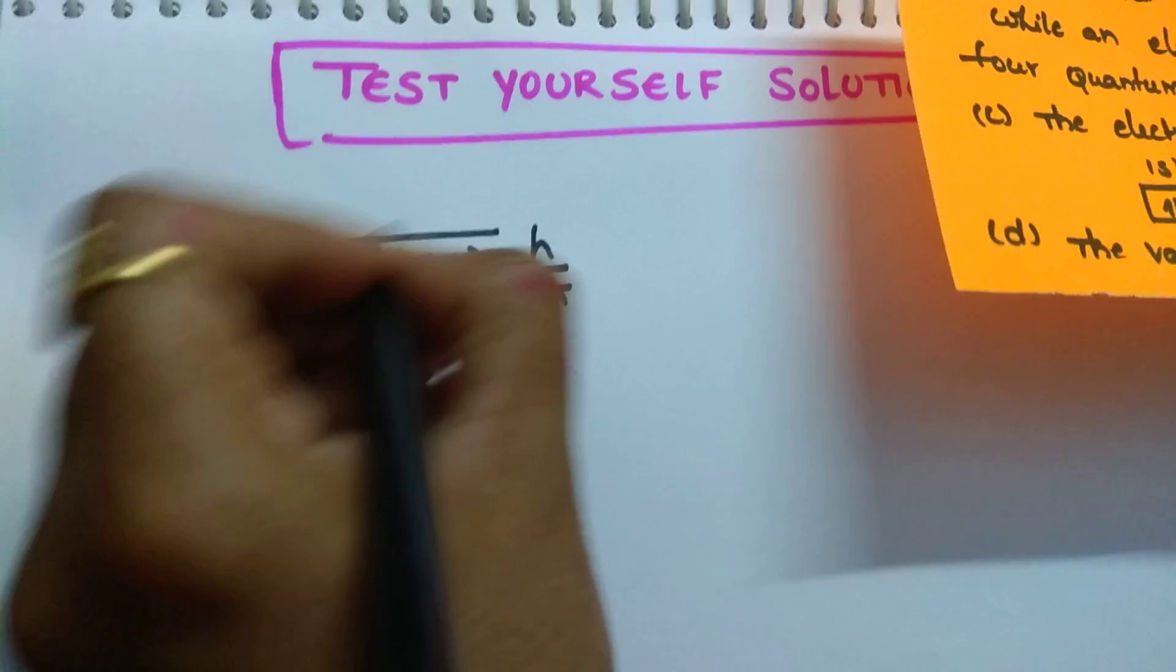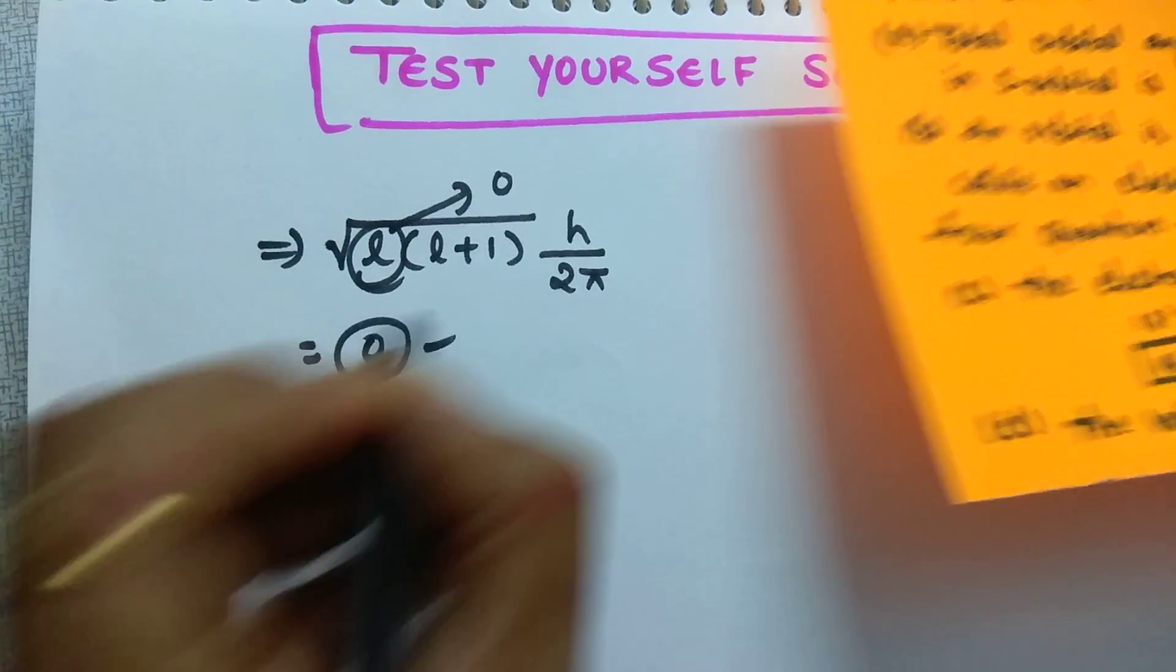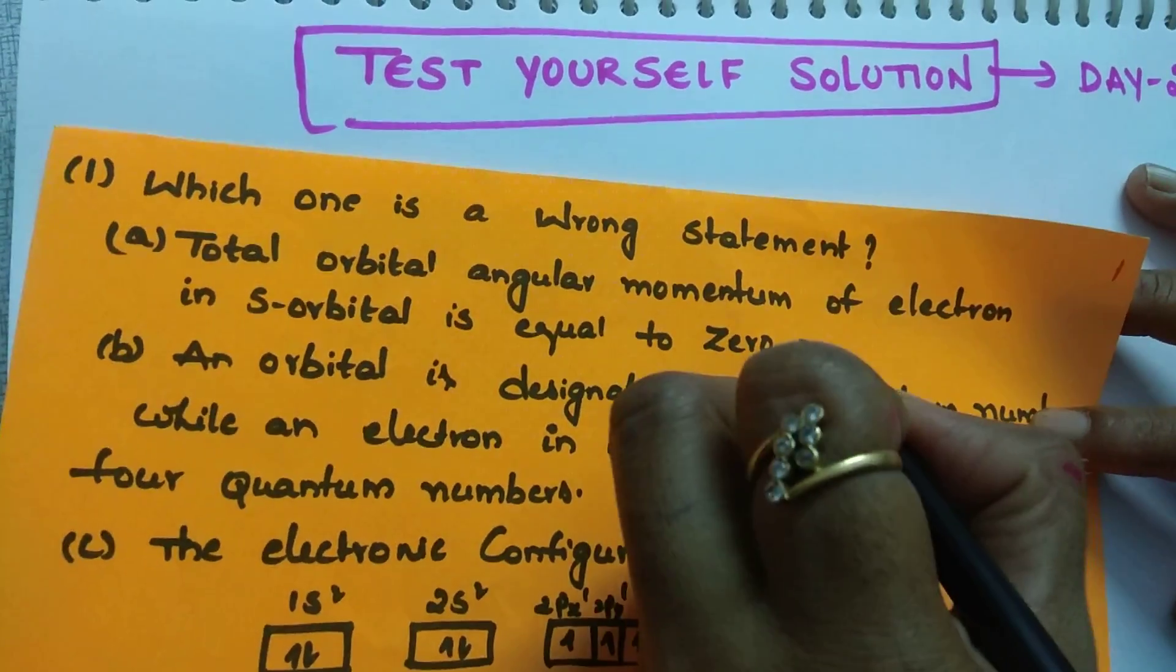What is the L value for s orbital students? Zero. So, if you substitute what you will get, you will get 0 only. So, this statement is correct.